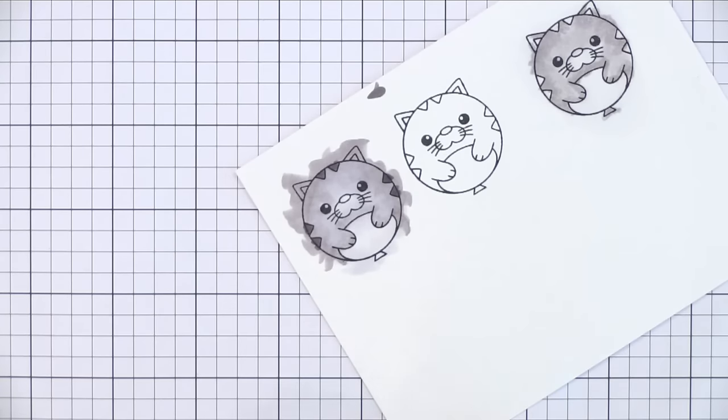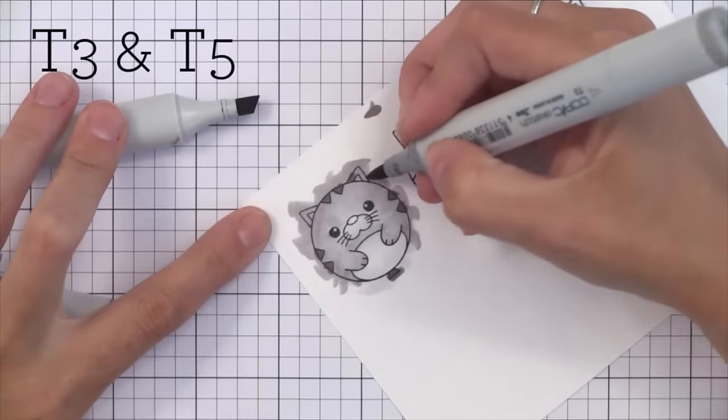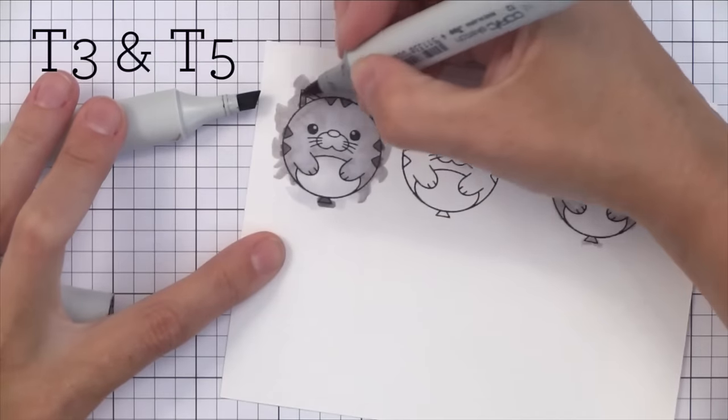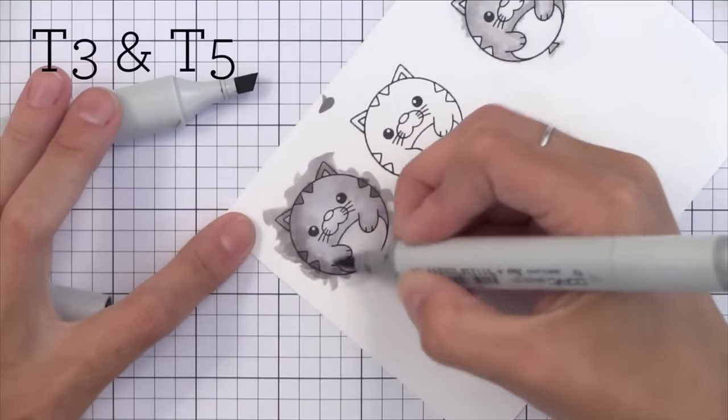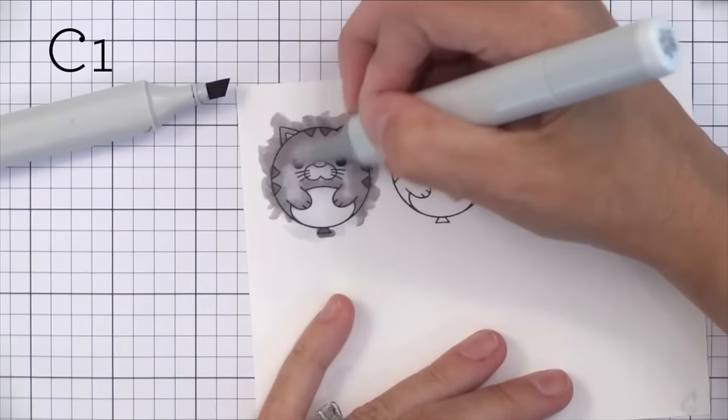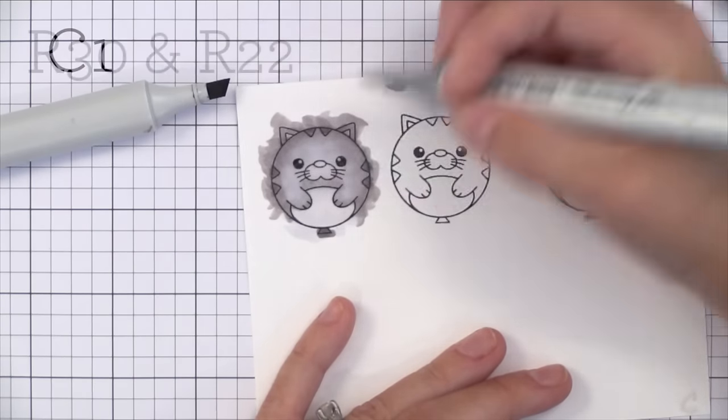Now I'm adding some T5 to the little stripes there. Then I want to get a color in between the T3 and T5 just to add a little more depth. So again I'm touching the lighter marker to the tip of the darker marker and that gives me a medium shade to help with that depth. Then I just blend it all out by going over it with C1.